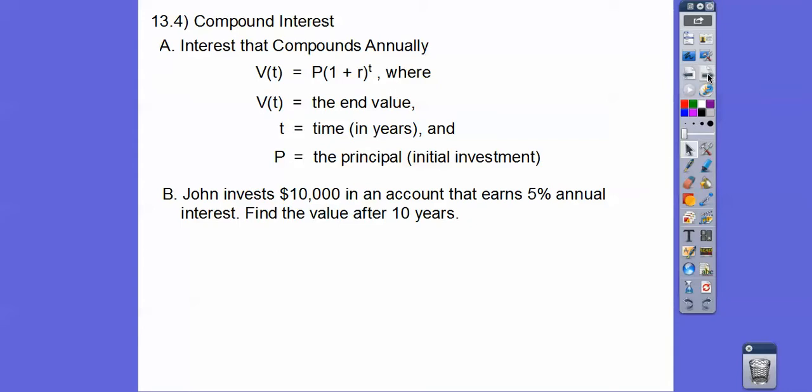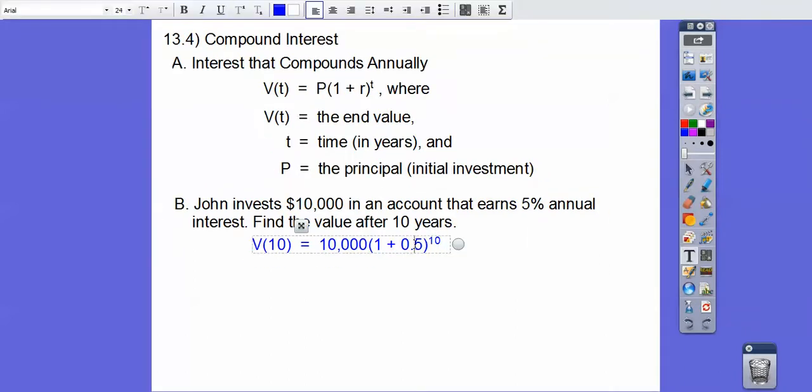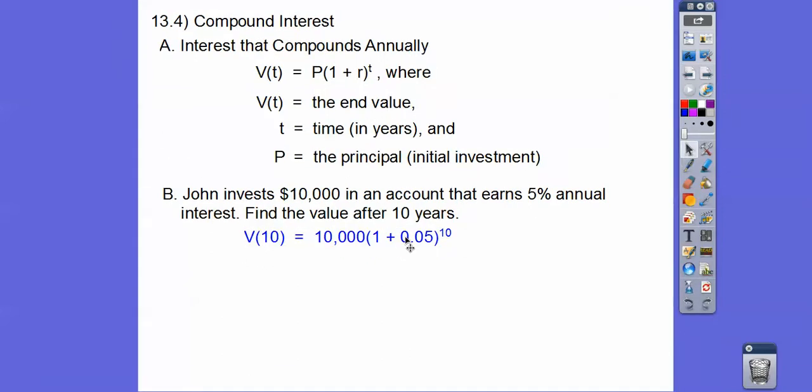So John invests $10,000 into an account that earns 5% annual interest. Find the value after 10 years. So we're just plugging it in. So the investment after 10 years is $10,000, his initial investment. And then 1 plus the interest rate. So 5% is, that should be 0.05. I know it says it in my other one. I'm positive. That should be 0.05 right there. So 1 plus 0.05 is 1.05.